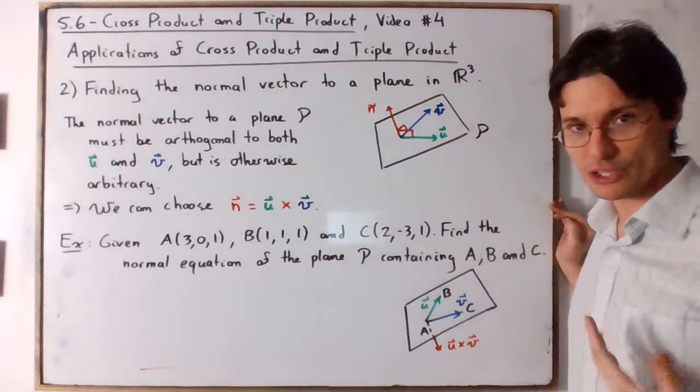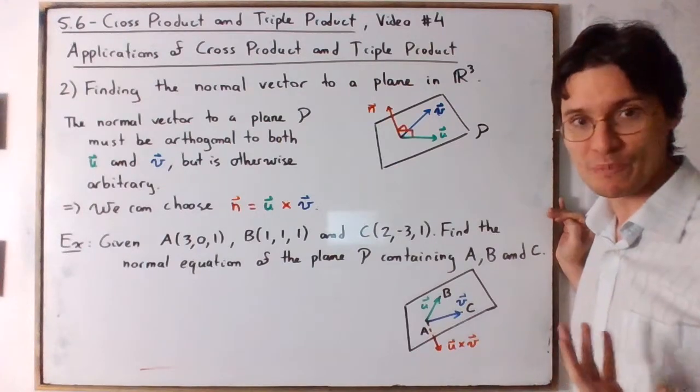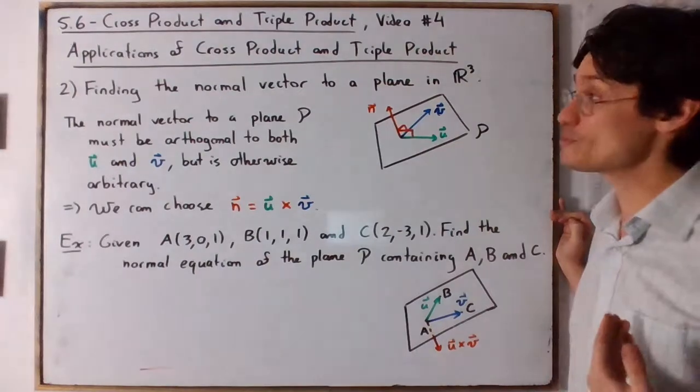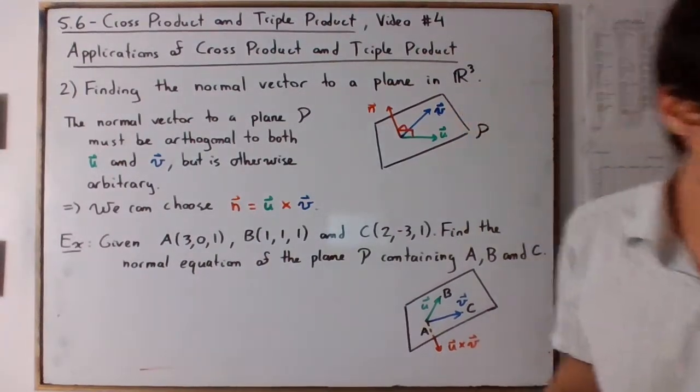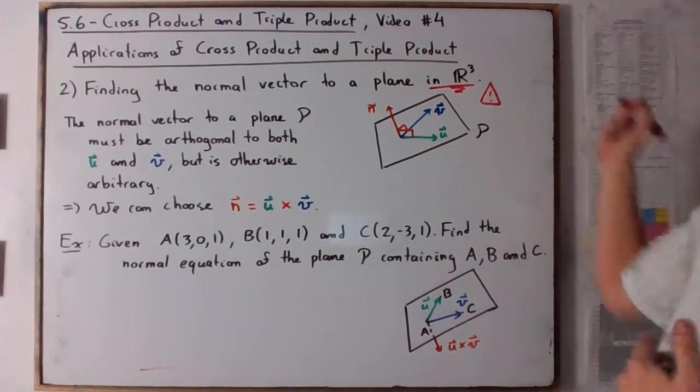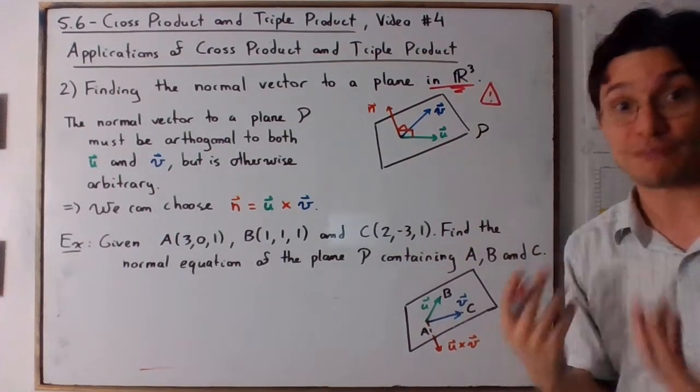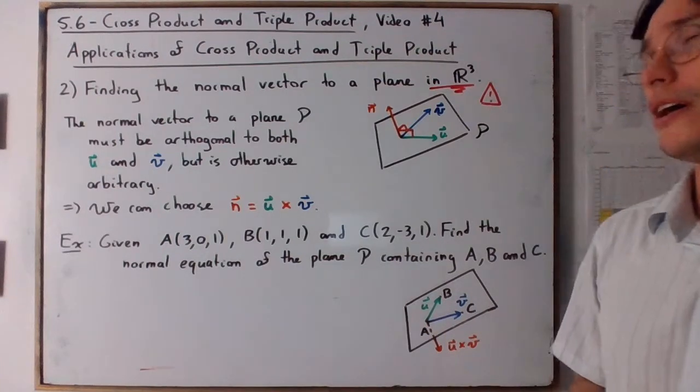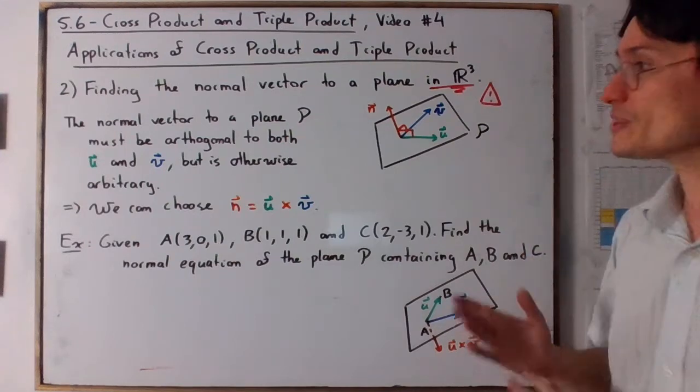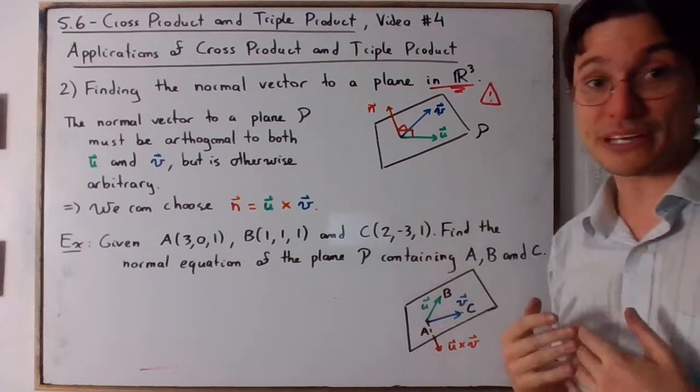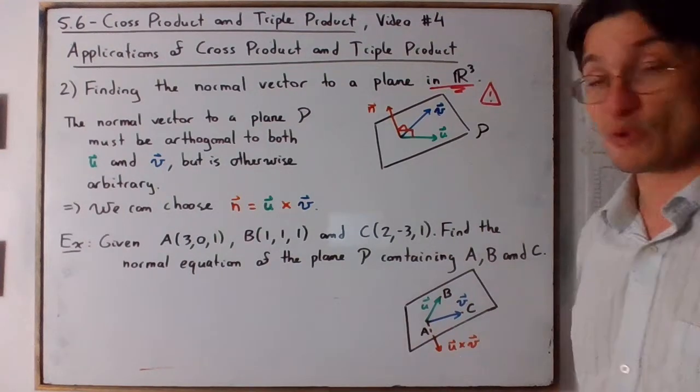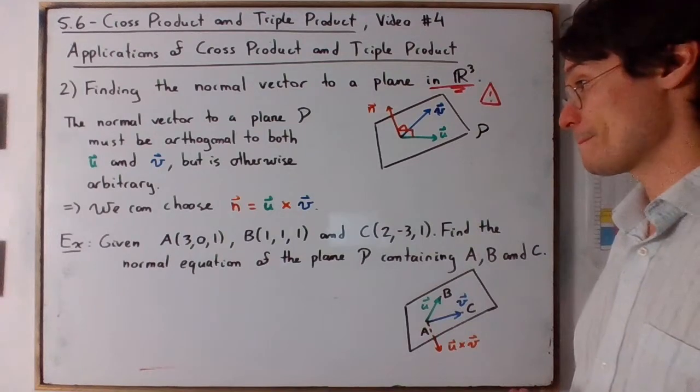Well we saw just one video ago that the cross product turns out to be orthogonal to both u and v, which means that if you are in R³, this works in R³ only. So don't take this as a magic trick. Because in R⁴ you have to do the full process that we saw in section 5.4. But if we are in R³, since as long as the vector is orthogonal, we're good, we can actually choose the cross product to represent our normal vector.